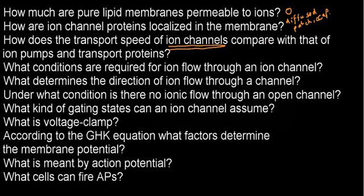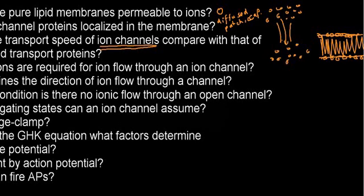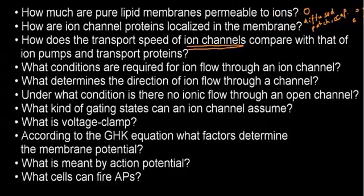What conditions are required for ion flow through an ion channel? There's really two conditions. First of all, I need for that channel to be open, because if the channel is closed or sealed tight, nothing can come in. Also, because this is a form of passive diffusion, facilitated passive diffusion, I need to have a chemical gradient. I need to have molecules on one side and less molecules on the other side, then molecules are going to come through.